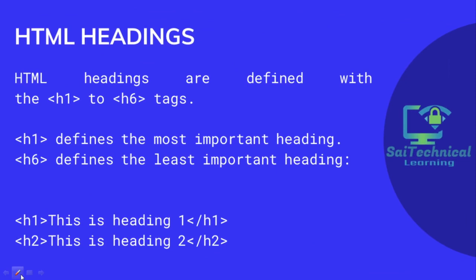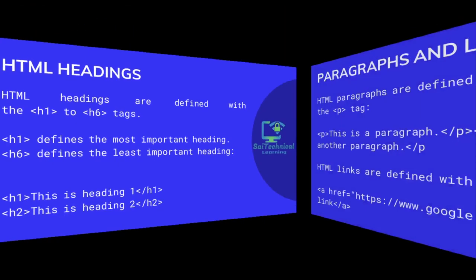HTML headings are defined with the h1 to h6 tags. The h1 tag defines the most important heading and the h6 tag defines the least important heading. To write them, we use the heading tag, then its contents, and close the tag — from h1 up to h6.